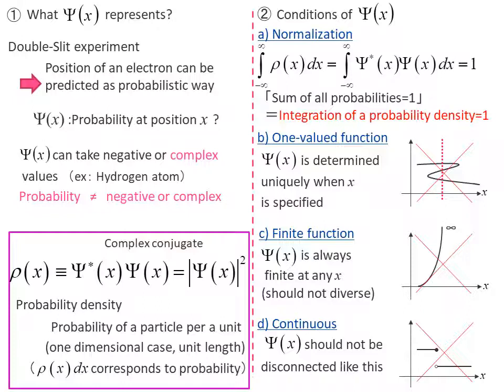For example, let's consider what Ψ(x) represents in the case of electrons. Remind the double slit experiment. In the double slit experiment, it was not possible to predict where a single electron would go through exactly, and only by injecting many electrons, we can know the paths where electrons often go through.